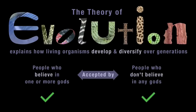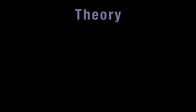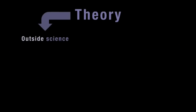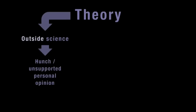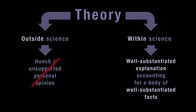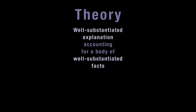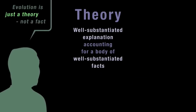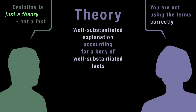It's also important to understand what a scientific theory is. Outside science, people often use the word theory to refer to a hunch or unsupported personal opinion — this is not what the word means in science. In science, a theory refers specifically to a well-substantiated explanation which accounts for a body of well-substantiated facts. So whenever we encounter a statement like 'evolution is just a theory, not a fact,' this tells us that whoever made the statement is not using the terms correctly.